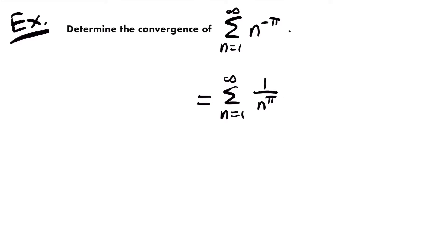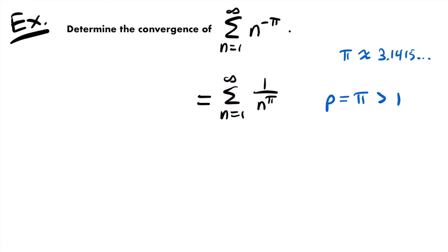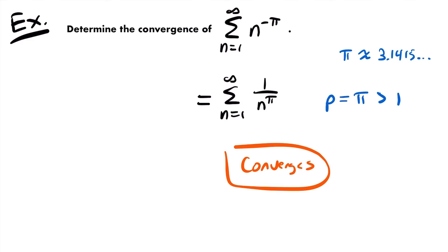In this case p is equal to pi. Is pi greater than 1? Well, pi is approximately equal to 3.1415..., so 3.14 is greater than 1, which means pi is greater than 1, and so this p-series will converge. We can conclude that this series converges. Let's look at another example.